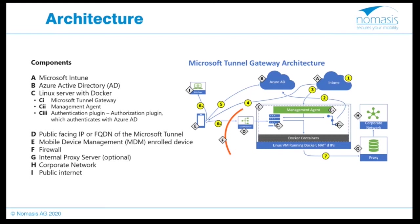At point five, the device authenticates to Azure Active Directory, where conditional access policies are evaluated. Looking at point six — VPN with split tunnel — you can see 6a and 6b: some traffic goes directly to the public internet, and some traffic goes to your public-facing IP address for the tunnel, depending on which app has been assigned to use the tunnel, while apps not assigned will bypass it. The seventh and last point explains how the tunnel routes traffic to a proxy server if there is one, and finally to your corporate network.